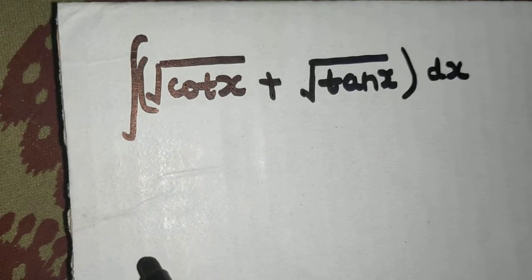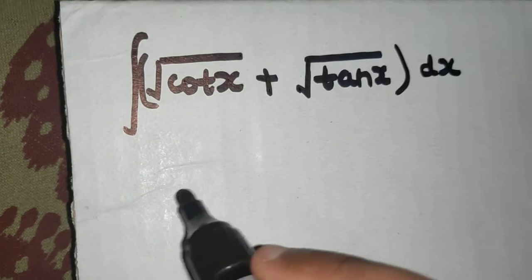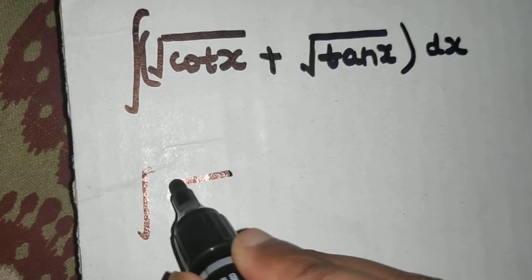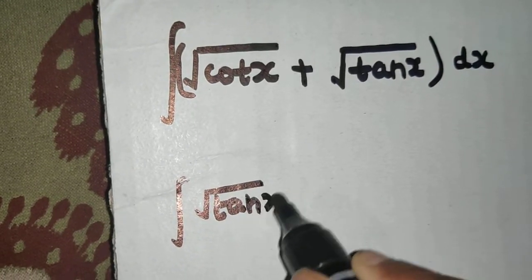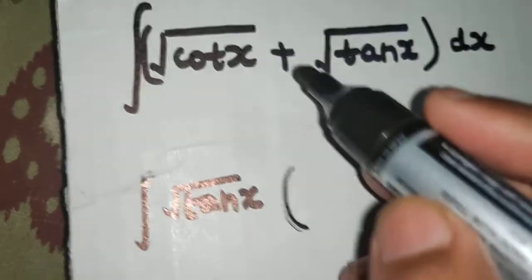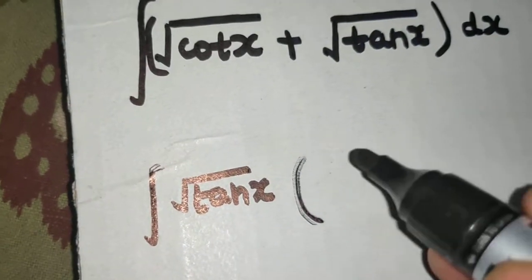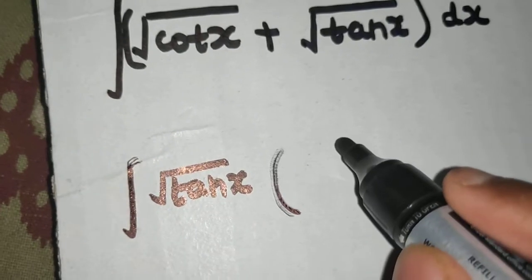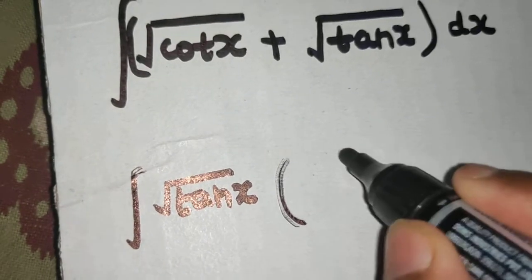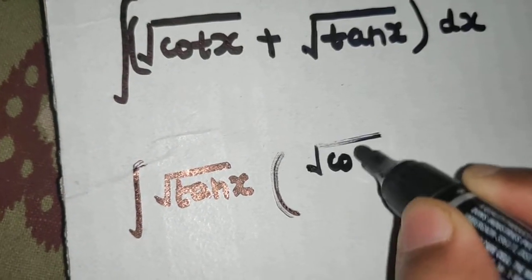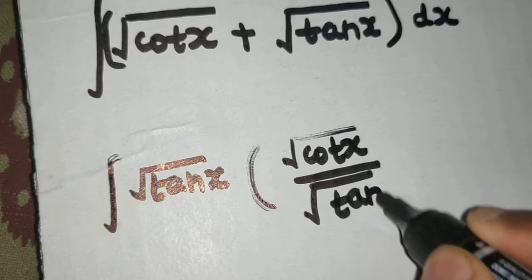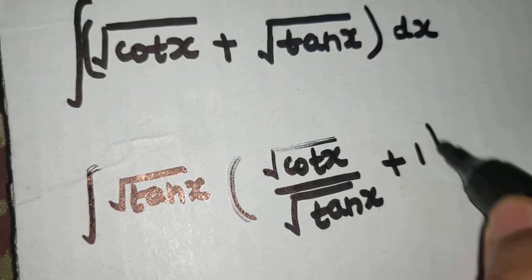So how will I solve this question? I'm taking √(tan x) common. Because the first term is √(cot x) and it doesn't have any √(tan x) in it, if some term doesn't have the factor you've taken common, simply divide by that term. So √(cot x) divided by √(tan x), and you took √(tan x) common, so you get 1 here.